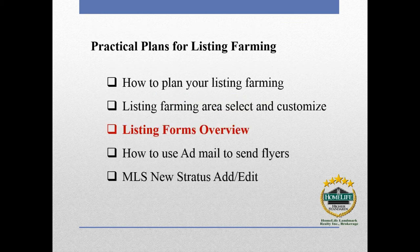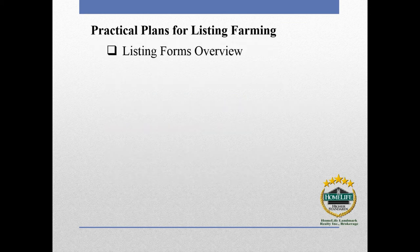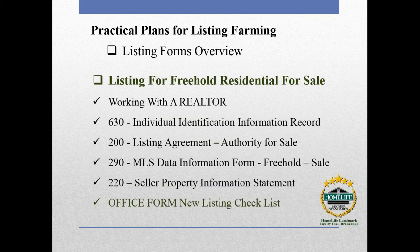Next is the listing forms. When we prepare the listing, we always need to know which forms to use. First is the 'Working with a Realtor' form — this introduces the agency relationship. Next is the 630 Individual Identification Form — we have to ask the seller to provide a photo ID. We explain: 'I need your ID to make sure you are the homeowner; I don't want someone else selling your property.' Next is the listing agreement, then Form 290 (MLS data form), Form 220 (SPIS — Seller Property Information Statement), and the office checklist. That covers all forms for freehold.